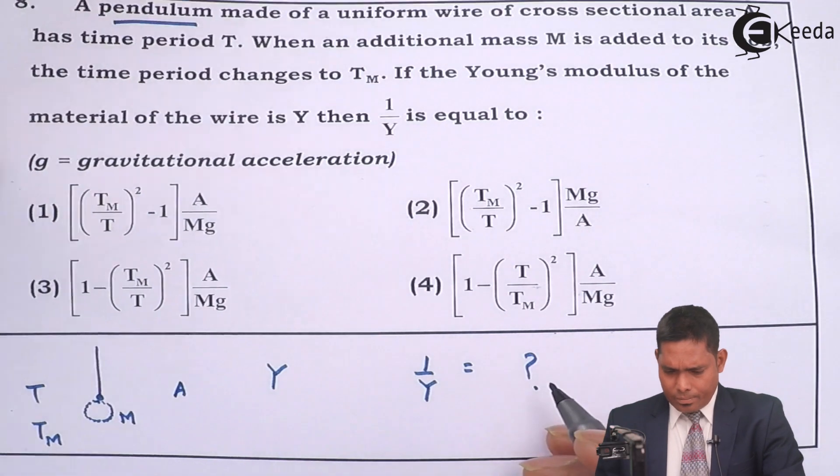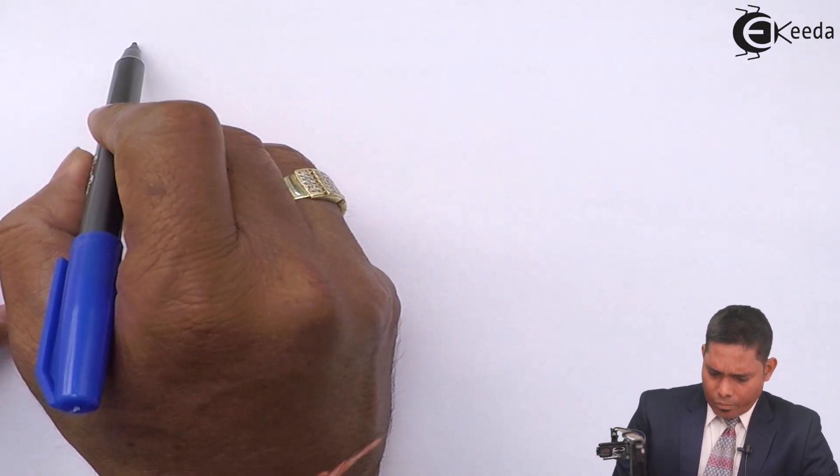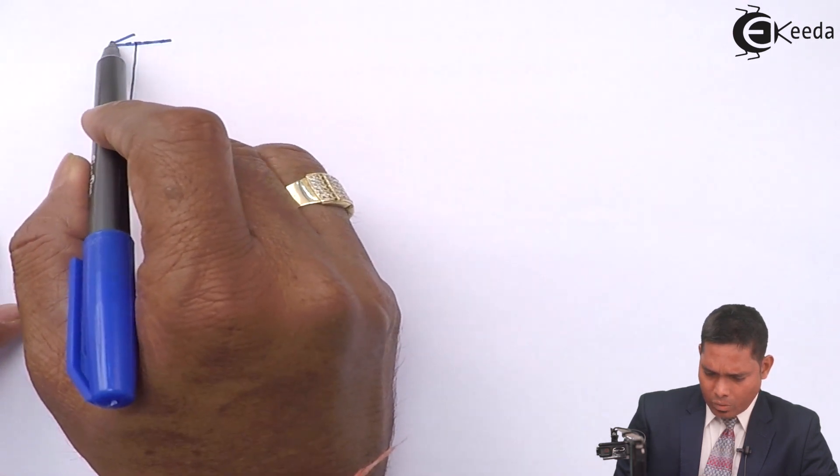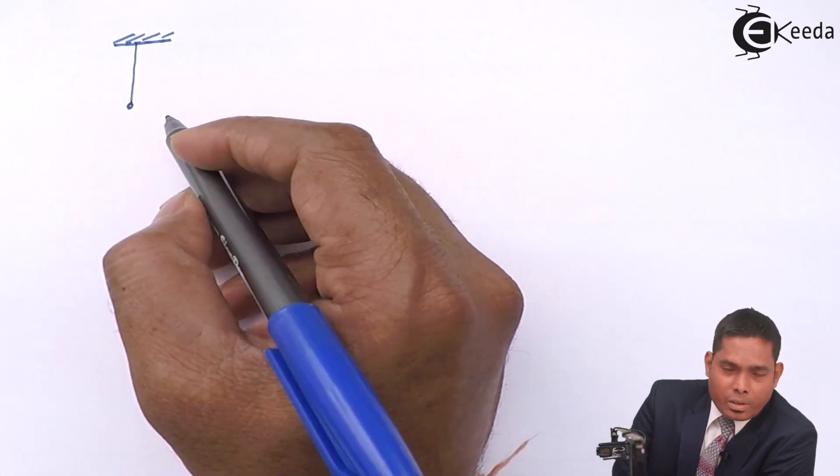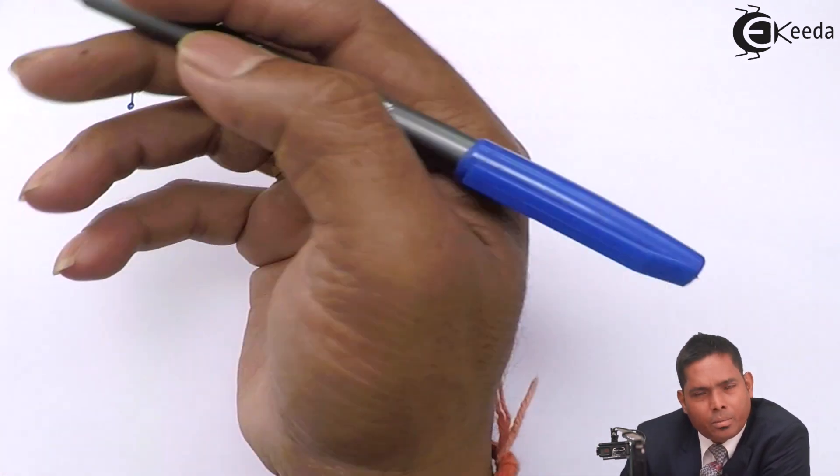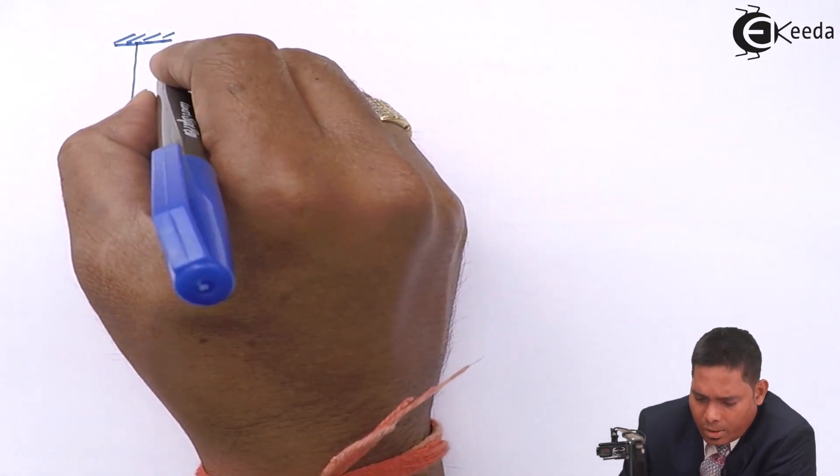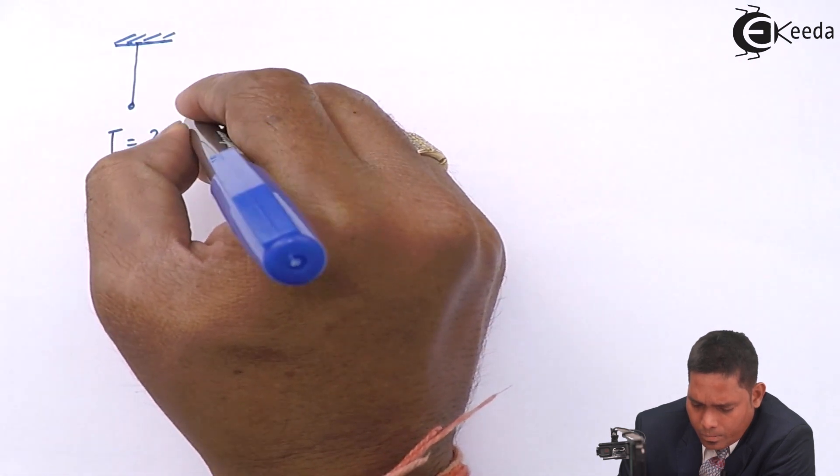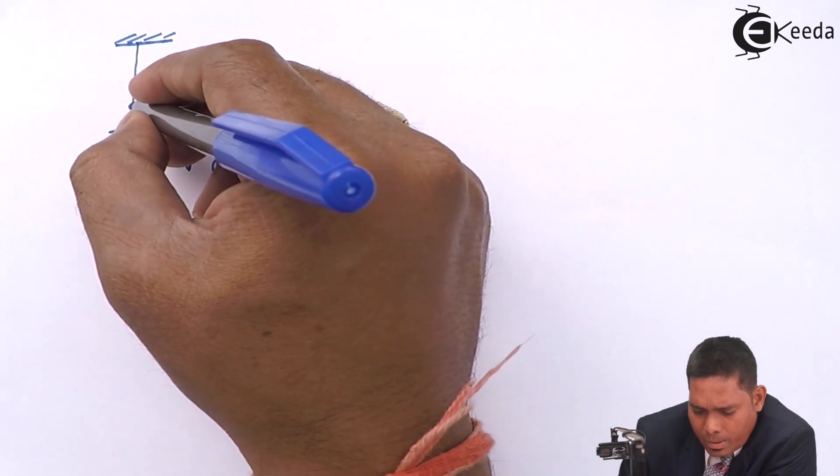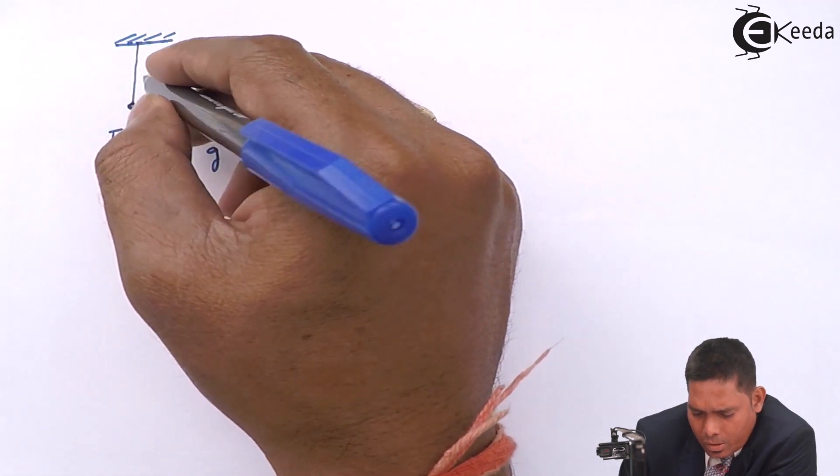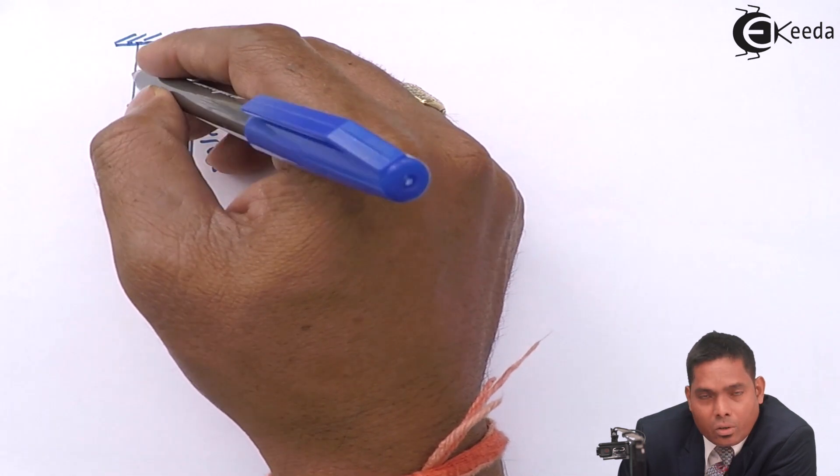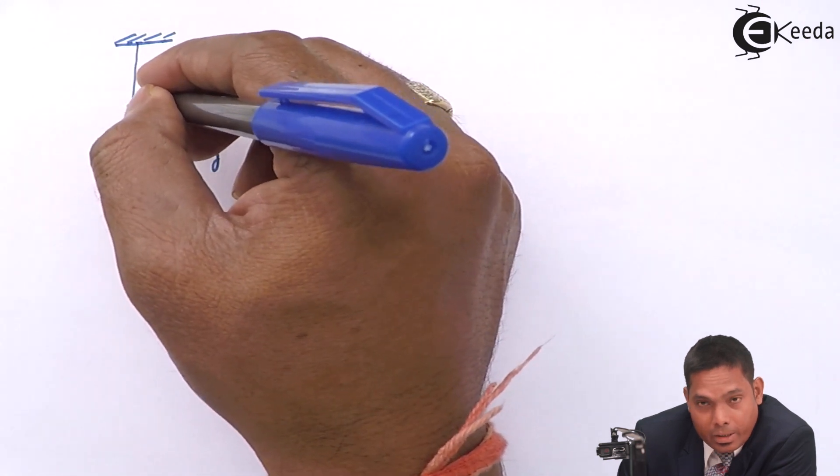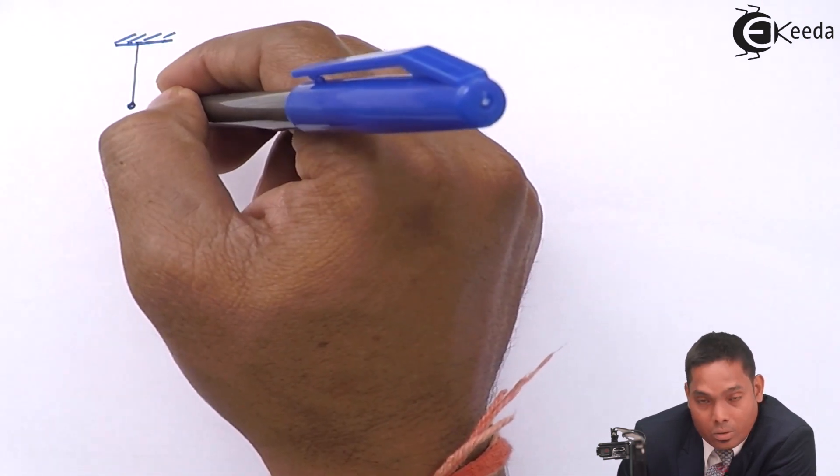When I have no mass attached to it, no additional mass, the extension would have been there. But in this case the time period will be equals to 2 pi under root L over G. This is the case when a small mass is there. So here the length L is not the length of the wire, it is the extension included. This is the effective length of the wire.